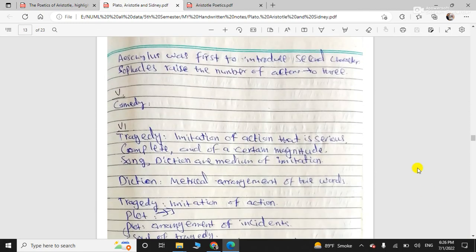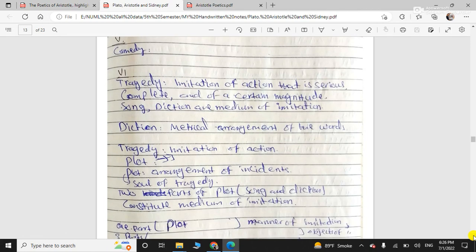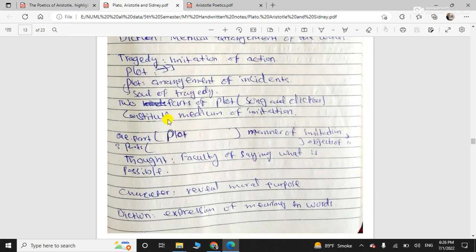Then he talks about comedy, that comedy is inferior to tragedy. Tragedy he considers superior form of art. Tragedy is imitation of actions that is serious, complete and of certain magnitude. Diction, language should be there. Metrical arrangement of words. Then tragedy's six components or elements he tells. And plot is the most important component or the element of tragedy. It is the soul of tragedy.